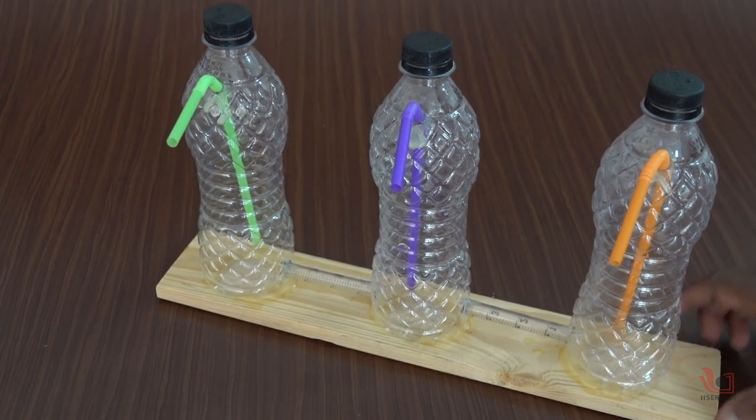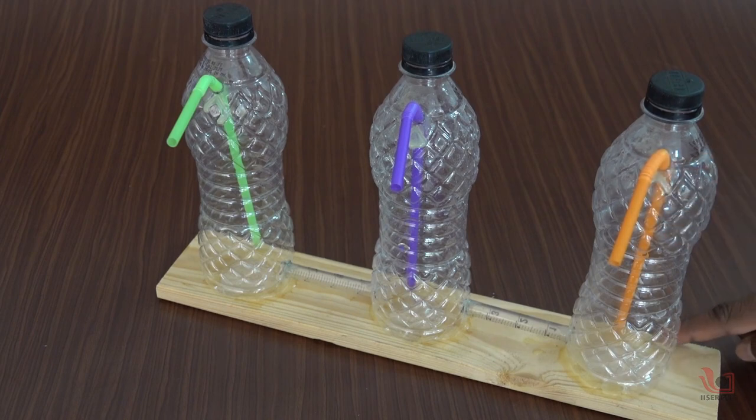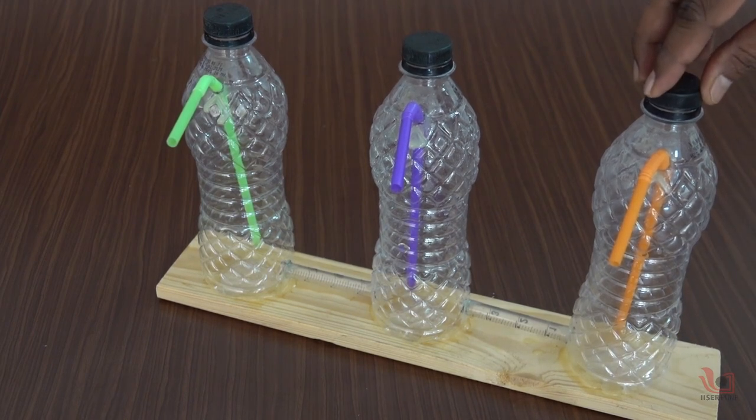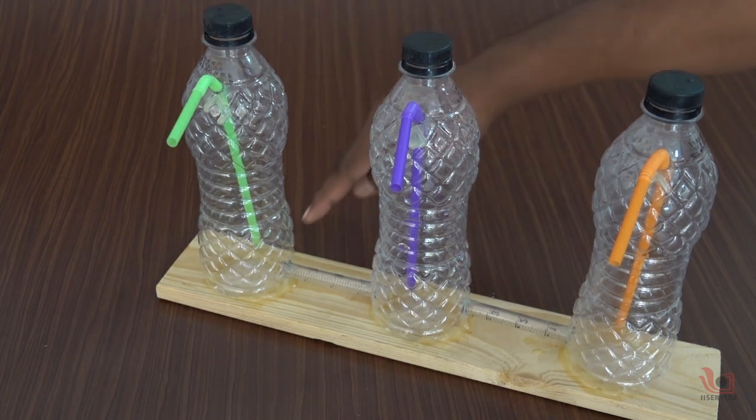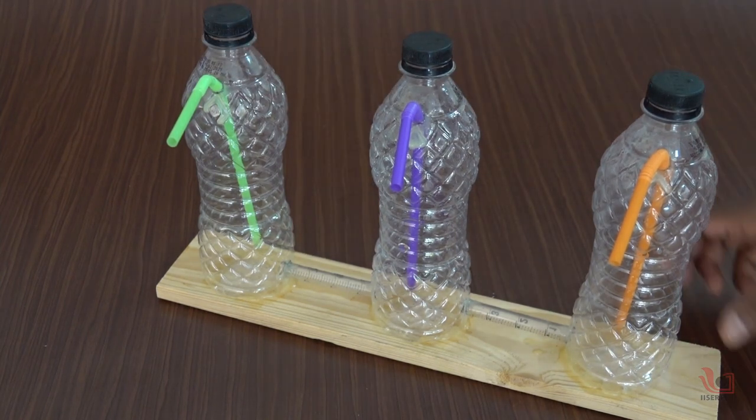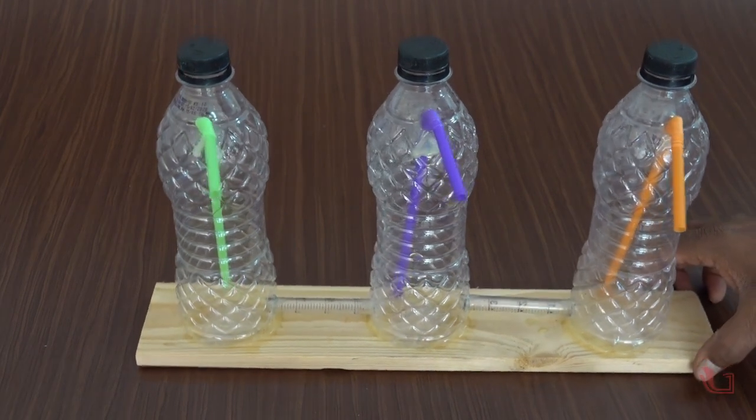Secure the holes with glue so that there should be no leakage of the water. Again, make the holes nearer to the neck of all three bottles and insert the bent straw into each bottle. Again, secure the holes with glue.